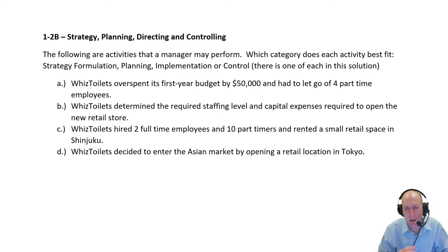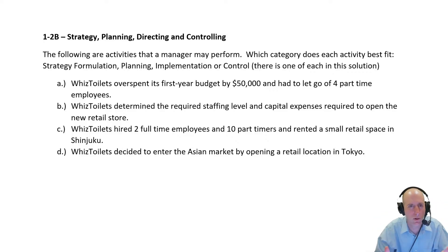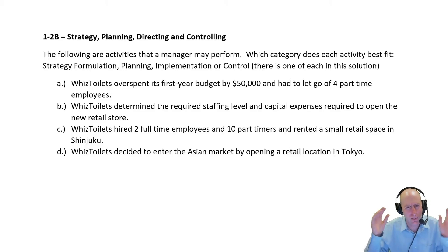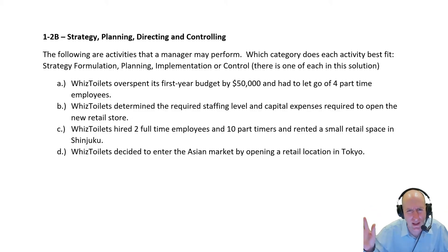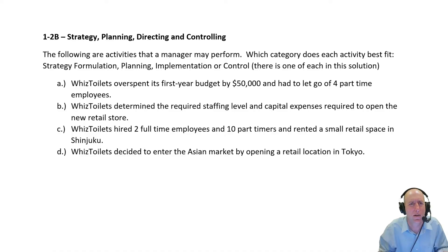Controlling is, after some amount of time, you look back and say: I was supposed to be going due north — am I going due north? You're double-checking your plan, asking does my plan still make sense and am I following it? So those are the four broad activities.